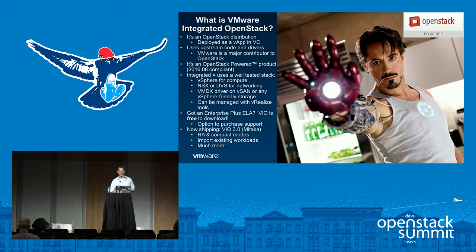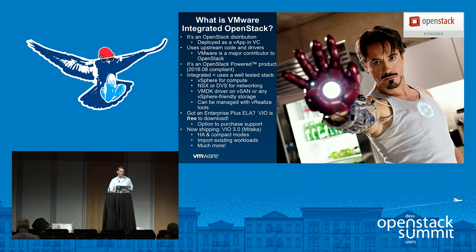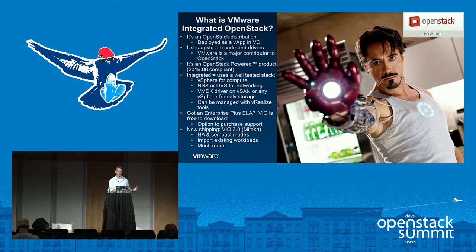VIO is an OpenStack-powered product. In order to get the OpenStack-powered mark, you have to pass a set of interoperability tests and make sure you're using designated sections of upstream code. So this is real OpenStack — as real as it gets from the foundation's perspective. It is considered an interoperable product. The 2016-08 guidelines are the most recent guidelines the foundation has issued on interoperability, and we were one of the first products to comply with those.